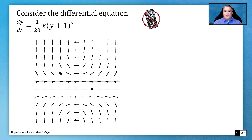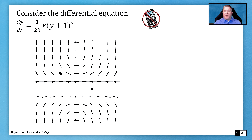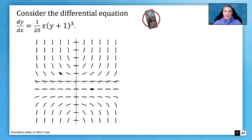This is AP Calculus AB, so if you're an AB student or a BC student, you are welcome to stay. We're going to get right into our stem. The stem is just the part of the question that you use throughout, and the stem for this is actually one sentence. It says: consider the differential equation dy/dx = (1/20)x(y+1)³.